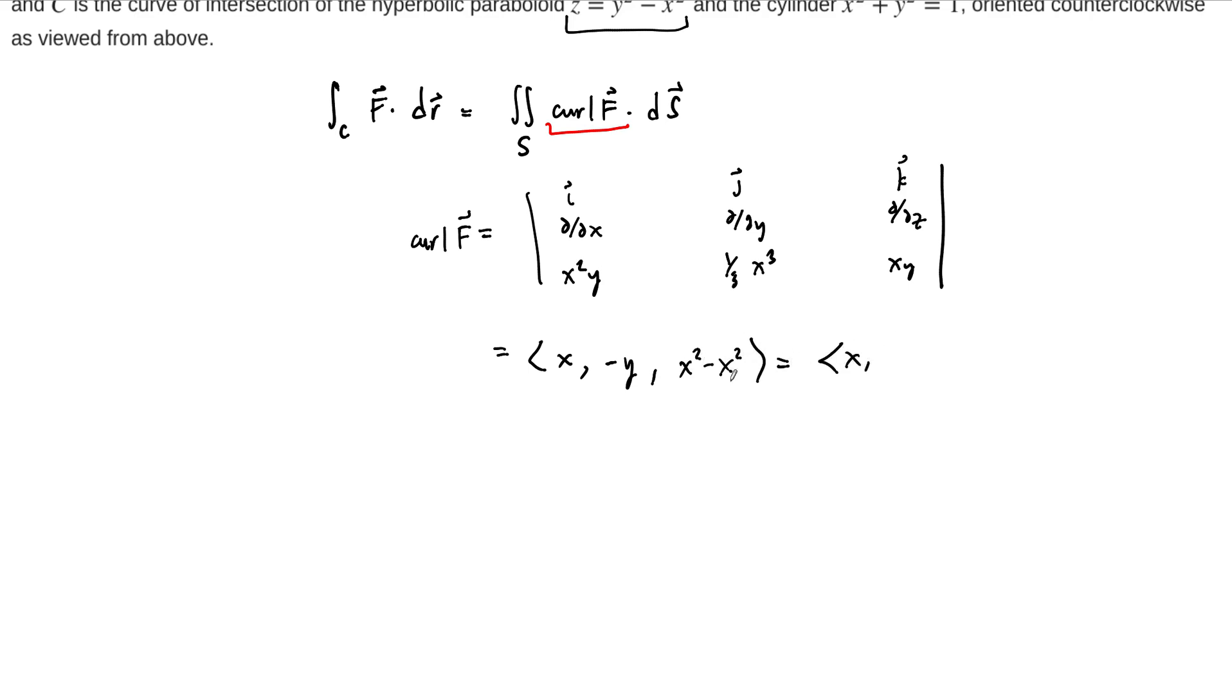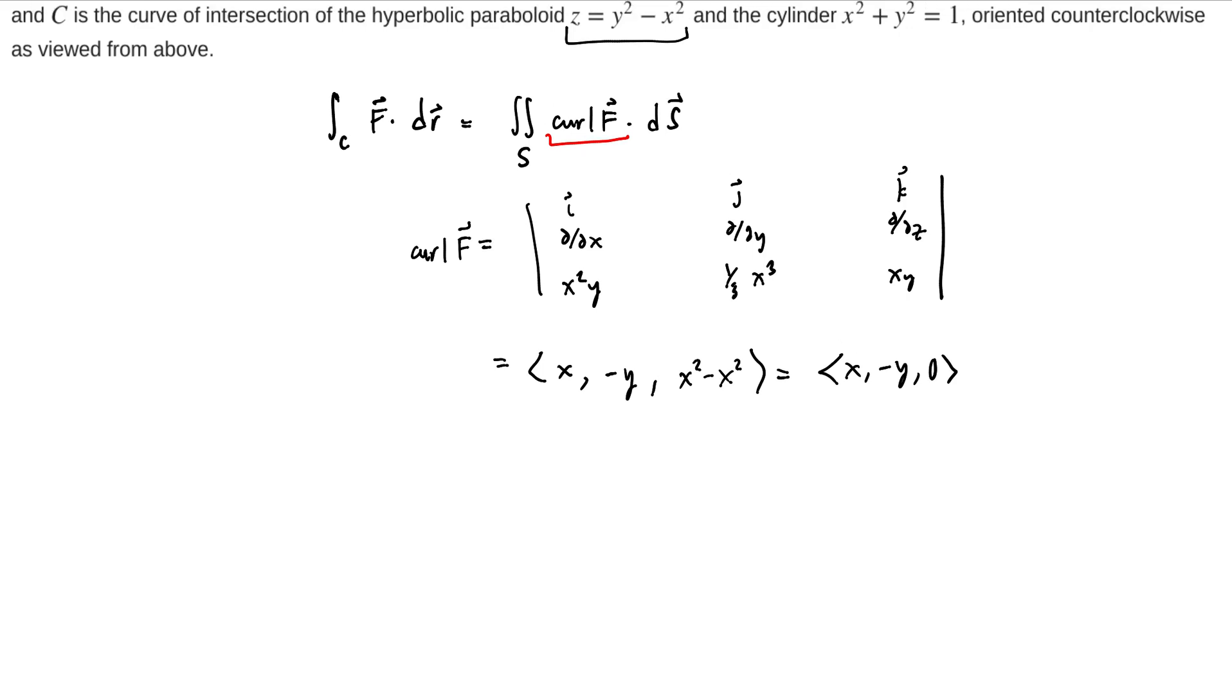So then this vector field that is the curl of our vector field, this is the one that we're going to integrate up, is just x comma minus y. Okay, so there's our vector field. Now we need to think about the surface.